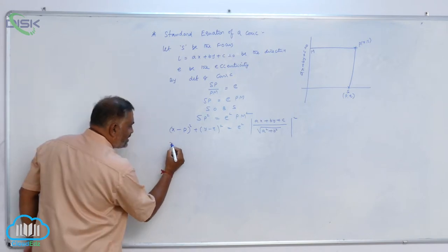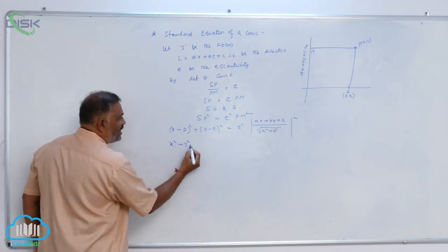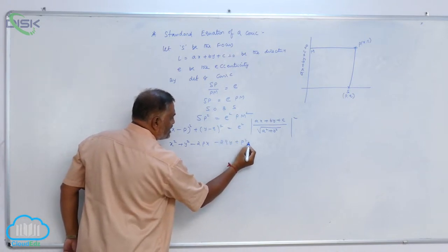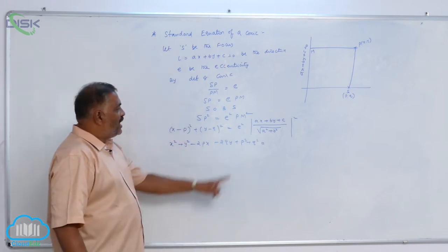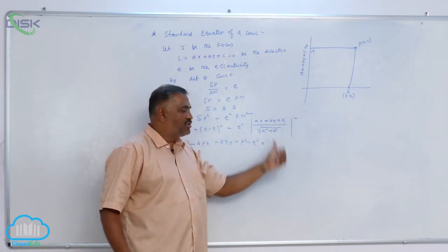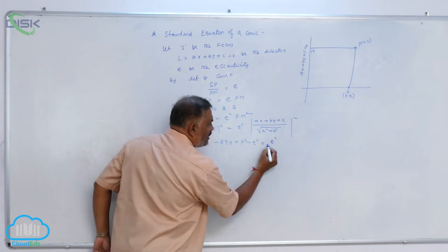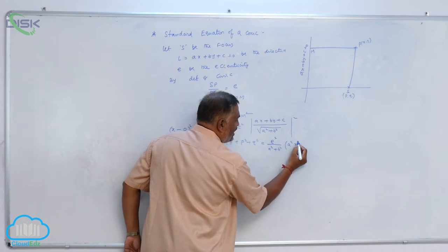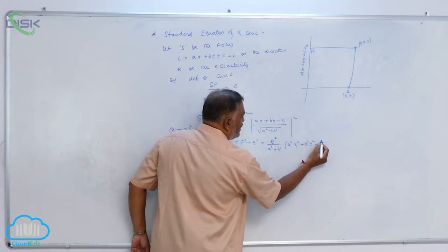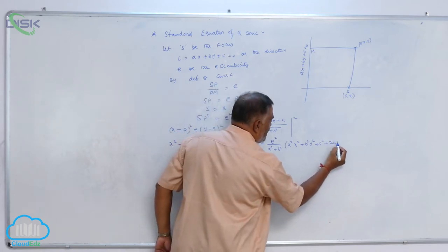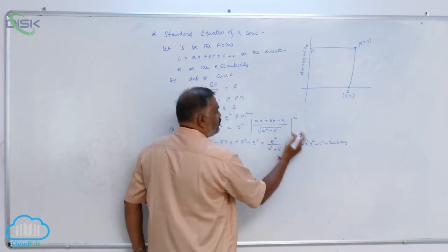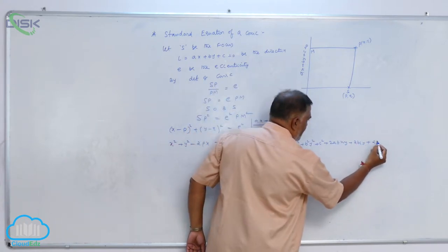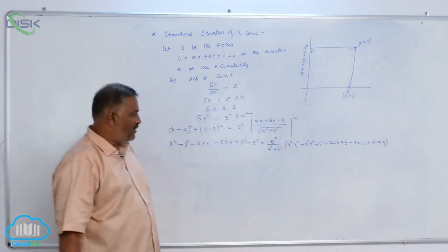Now, it is X square plus Y square minus 2Px minus 2Qy plus P square plus Q square is equal to, square and root is there. So, you can get E square by (A square plus B square) into, it is A square X square, B square Y square plus C square plus 2ABxy, again 2BCy, again 2CAx. So, you are able to see all the terms here.